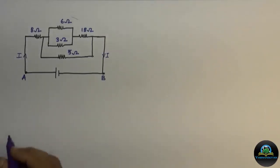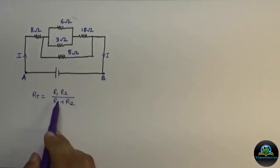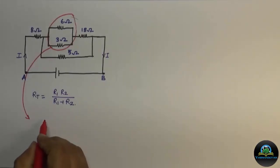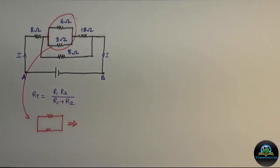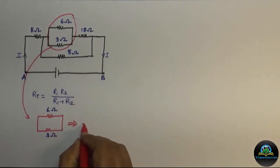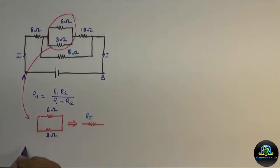So the 6 ohm and 3 ohm parallel connection can be converted into a single resistance. Let us denote it by RT. Now here, R1 is equal to 6 ohm, R2 is equal to 3 ohm.